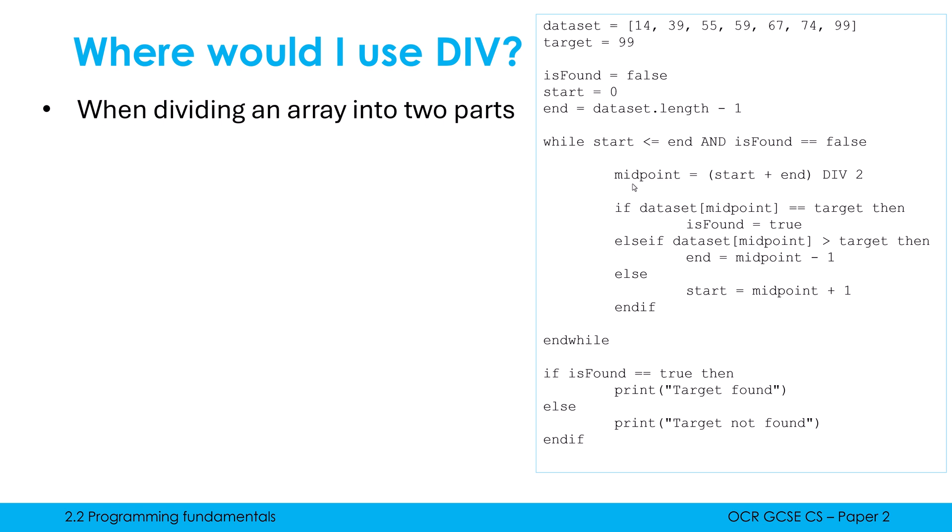I want a midpoint to be an index. An index is always a whole number. So therefore, doing something like 9 divided by 2 would give us 4.5. While 4.5 isn't an index, I would rather that becomes 4. So I use DIV to avoid an error when it gives me an index, which is not a whole number.